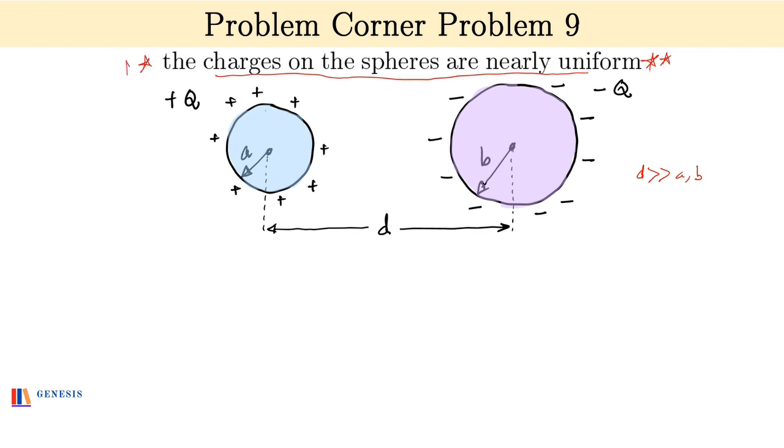So we now find the potential of these spheres. The potential of the positively charged sphere will be the sum of its own potential plus the potential of the negative sphere at its own location. And so V is nearly KQ by A which is its own potential plus K into minus Q by D.